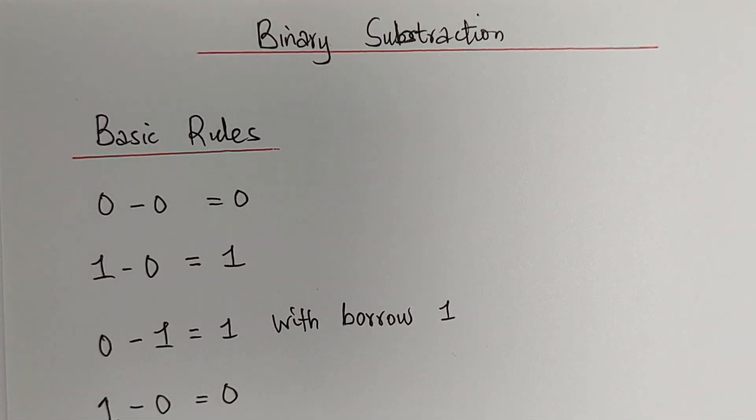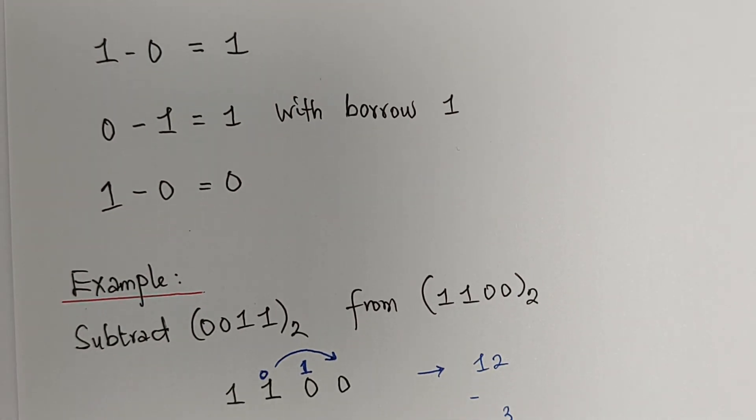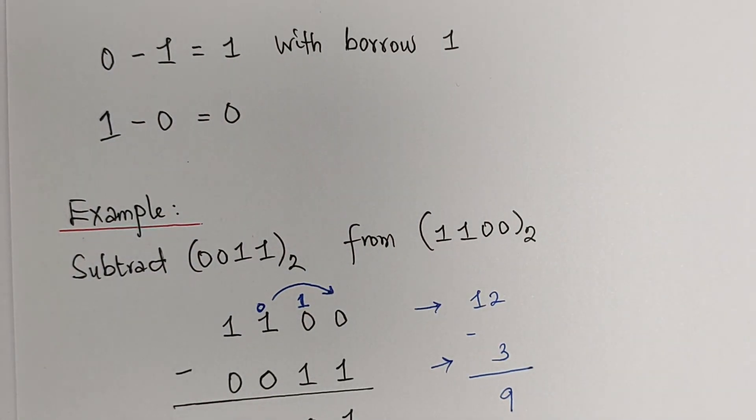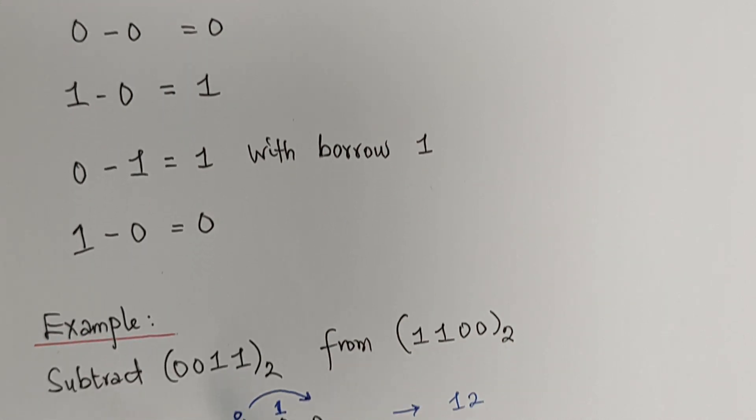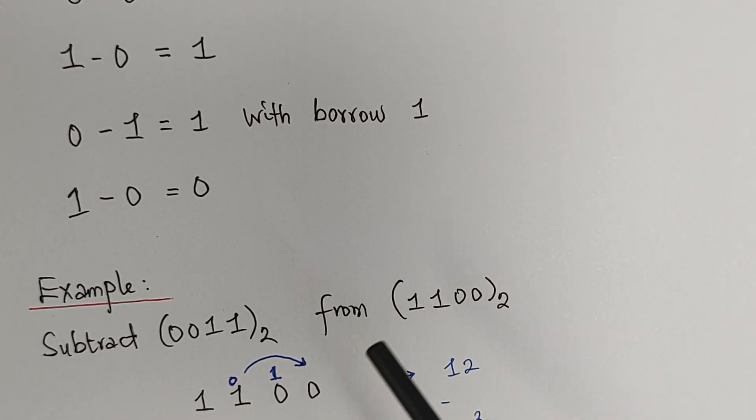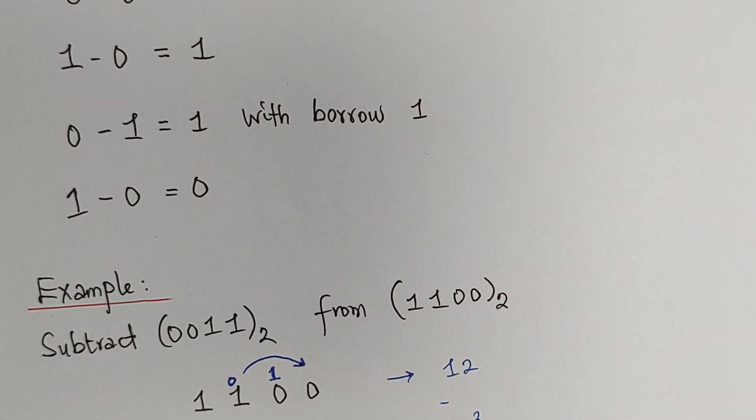Now, to better understand this, let's move straight with some examples. We have example 1, which says that we should subtract 0011 from 1100, all in base 2.